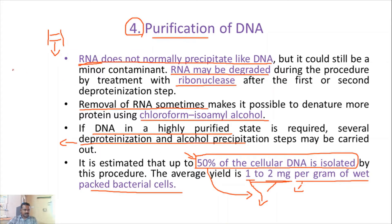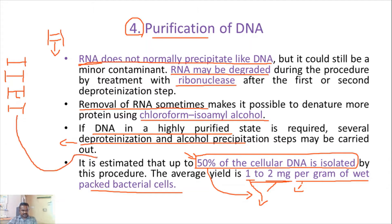To achieve the 50 percent yield, we maintain four steps: obtaining healthy growth cells, using an effective method for disrupting cells, an effective method for removal of cell debris, and an effective method for purification. Following these steps, 50 percent of cellular DNA can be isolated.